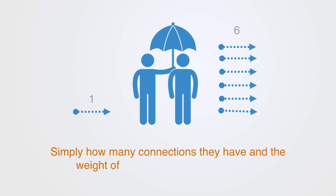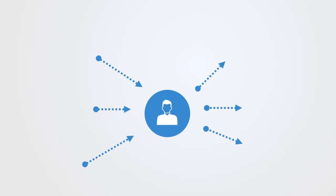Degree of connectivity tells us the likelihood of a node contacting or being able to affect whatever is being exchanged within their immediate locality in the network. It tells us something about their embeddedness, and a higher degree may be a positive or negative thing depending on what is spreading within the network. A node with a high degree of connectivity is called a hub. But this simple degree of connectivity measurement is a very blunt way of interpreting a node's significance and will need a number of other metrics to support it.